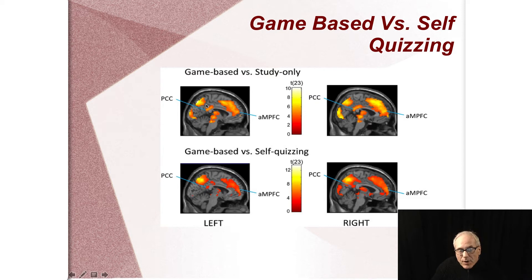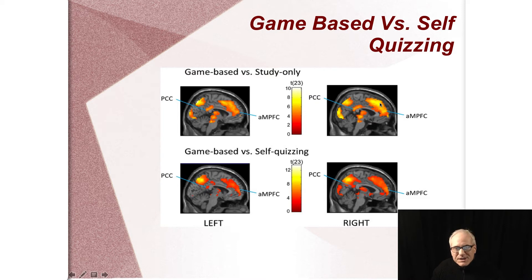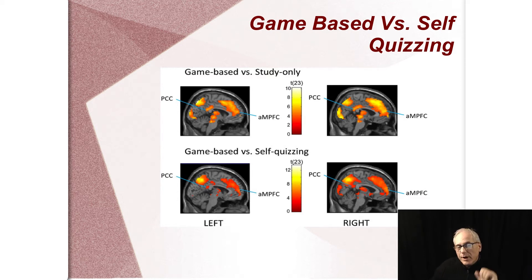Here are the default mode regions lighting up. This is a logarithmic scale — if it's dark, it's real dark; if it's bright, it's real bright. Look how bright and extensive the default mode is in someone doing self-study. In other words, even though they're in the process of self-study, they're kind of spacing out — not really focusing. We all know what happens when we study: we think about dinner, think about things we want to do, then get back to the books. It's very hard to be in a truly mindful state.